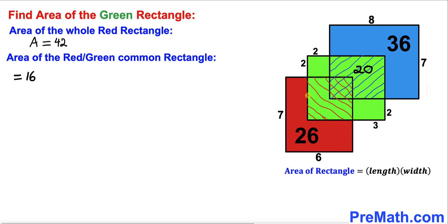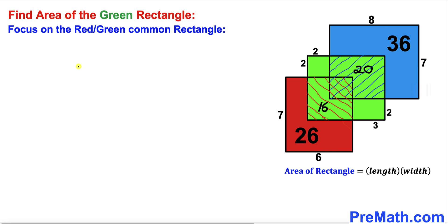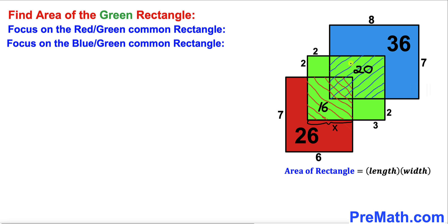Now let's focus on the red-green common rectangle and call this side x units. Likewise, for the blue-green common rectangle, let's call this side y units. The total length from here to here is going to be y plus 2. Since we are dealing with a rectangle, the opposite side is also y plus 2. We know this length is 2, so this portion is y units.